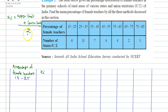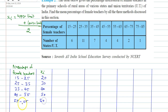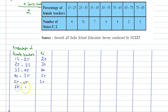For the interval 15 to 25, Xi = (15+25)/2 = 20. Similarly, 25 to 35 gives 30, 35 to 45 gives 40, 45 to 55 gives 50, 55 to 65 gives 60, 65 to 75 gives 70, and 75 to 85 gives 80.